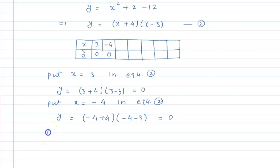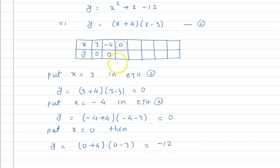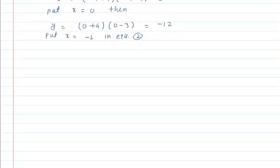Put x is equal to 0: y is equal to (0 + 4)(0 - 3) is equal to minus 12. So when x = 0, y = minus 12. Now put x is equal to minus 1 in equation 2: y is equal to (minus 1 plus 4)(minus 1 minus 3) is equal to 3 into minus 4, which is minus 12.